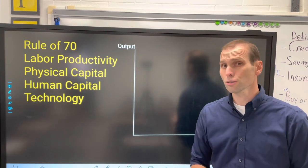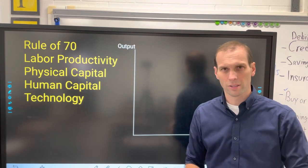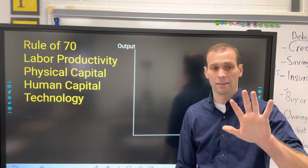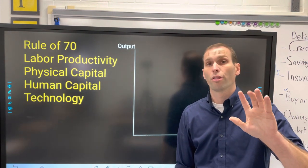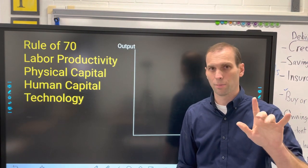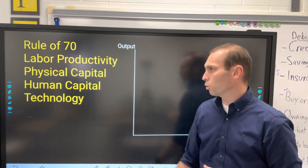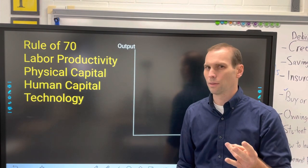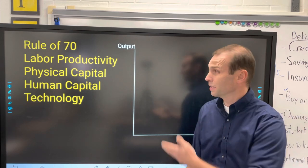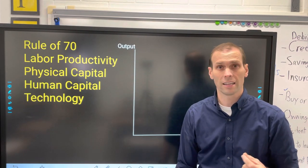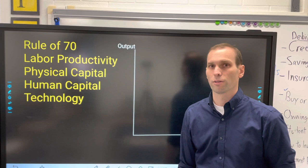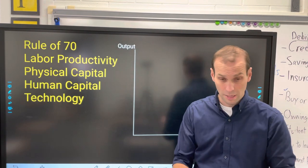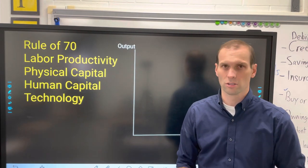The things that shift the long-run aggregate supply curve — we learned there were five: technology, human capital, and the three factors of production: land, labor, and capital. We tend to focus on physical capital because finding more land and labor is much harder, but it's easier for an economy to gain more physical capital — man-made goods used to produce other goods and services.